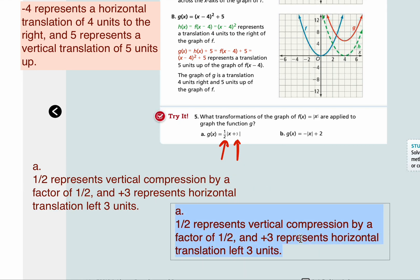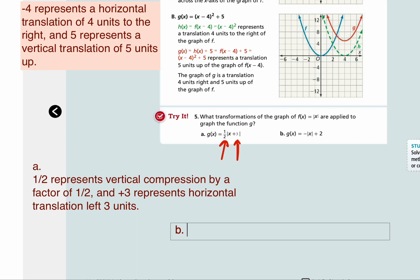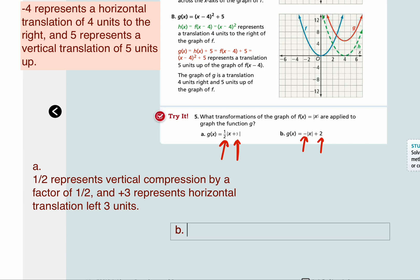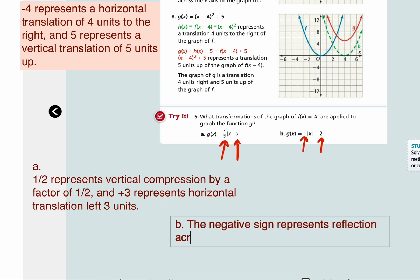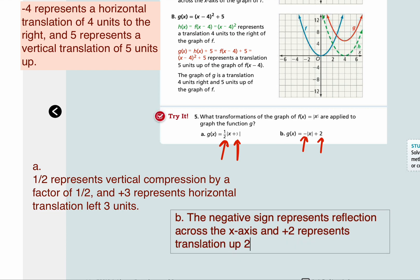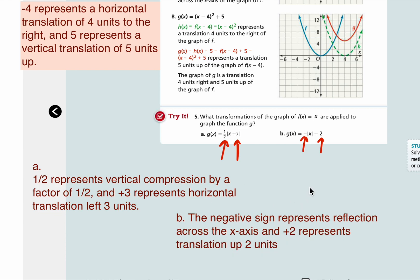What about part b? You see that the negative sign is a change factor and plus 2 is a change factor, and they're both outside the function of absolute value. So the negative sign represents reflection across the x-axis, and positive 2 represents a vertical translation up 2 units.